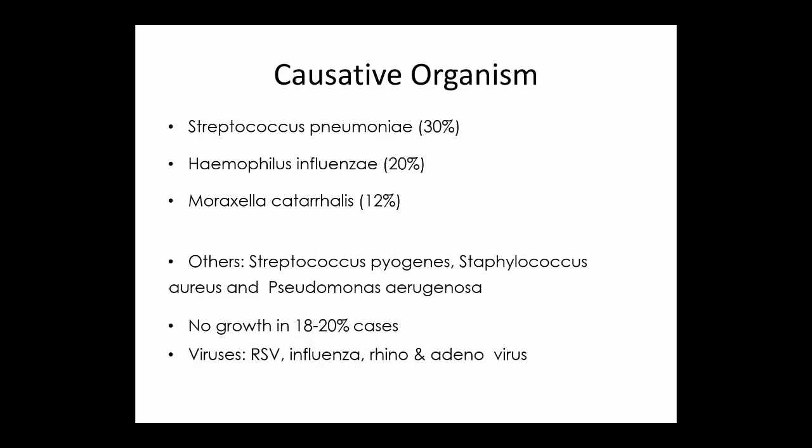The causative organisms of ASOM: three main bacteria responsible are Streptococcus pneumoniae, Haemophilus influenzae, and Moraxella catarrhalis — these three bacteria are found in the majority of cases. Other bacteria include Streptococcus pyogenes, Staphylococcus aureus, and Pseudomonas aeruginosa. In 18–20% of cases there is no growth found. Some viruses like RSV, Influenza, Rhinovirus, and Adenovirus are also responsible for ASOM.